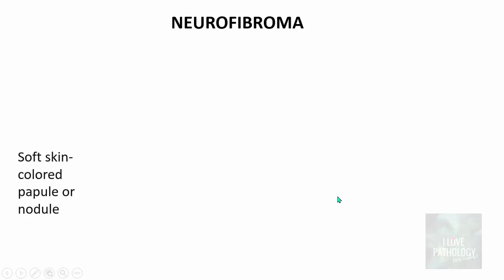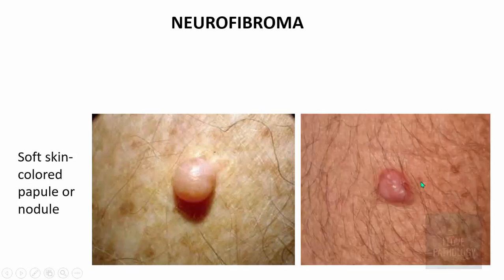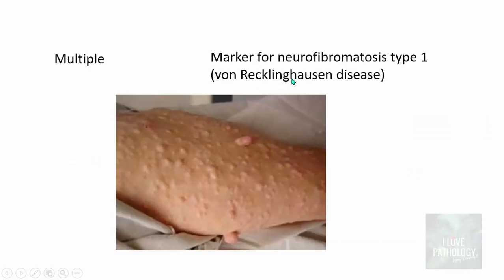Neurofibromas can present clinically as a soft skin-colored papule or nodule, which can be solitary. Most of the times they are solitary, but when multiple, it is usually a marker for neurofibromatosis type 1 — that's von Recklinghausen's disease.